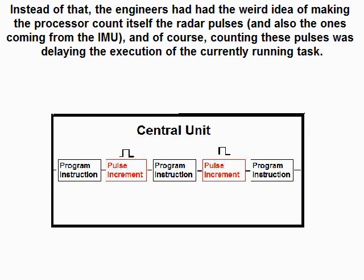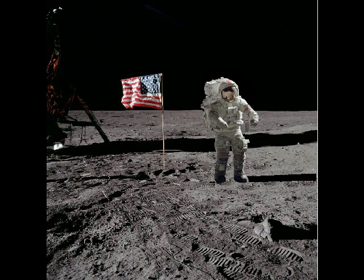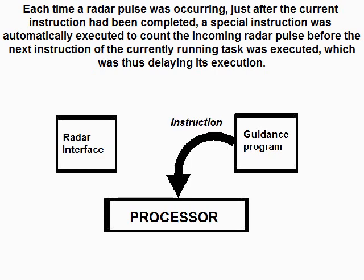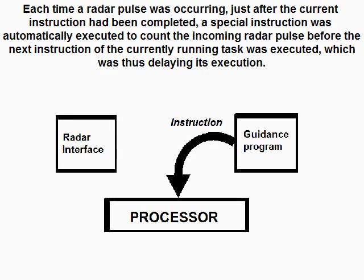Instead, the engineers had the idea of making the processor count the radar pulses itself, and also the ones coming from the IMU. Counting these pulses was delaying the execution of the currently running task. Each time a radar pulse occurred just after the current instruction had been completed, a special instruction was automatically executed to count the incoming radar pulse before the next instruction of the currently running task was executed, thus delaying its execution.